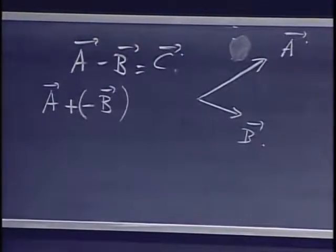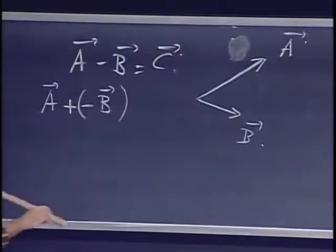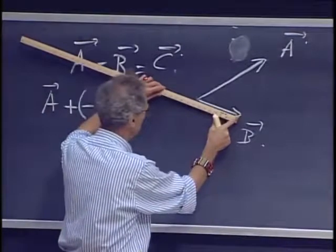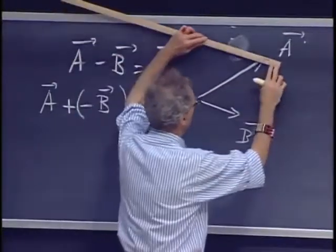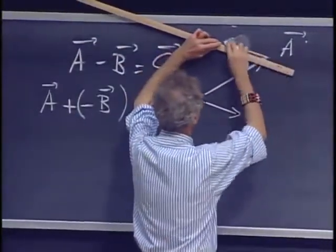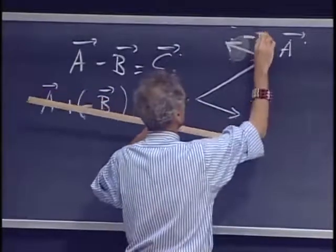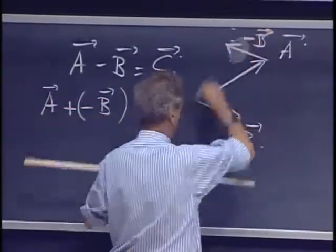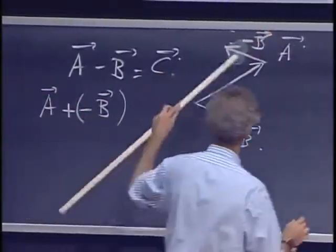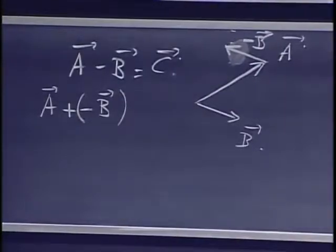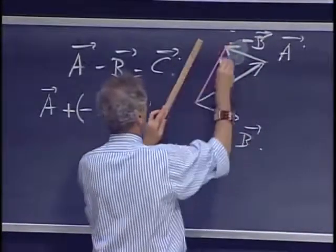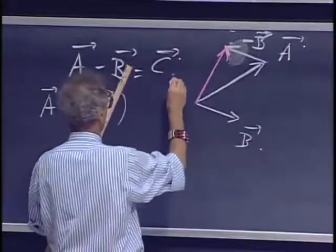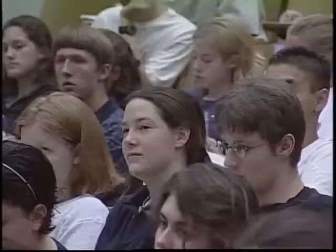And we know how to add vectors, and we know what minus B is. Minus B is the same vector but flipped over. So we put here minus B. And so this vector now here equals A minus B. This vector C is A minus B.